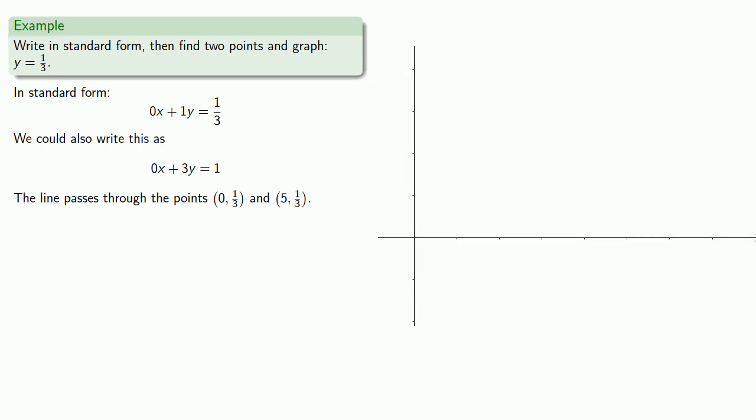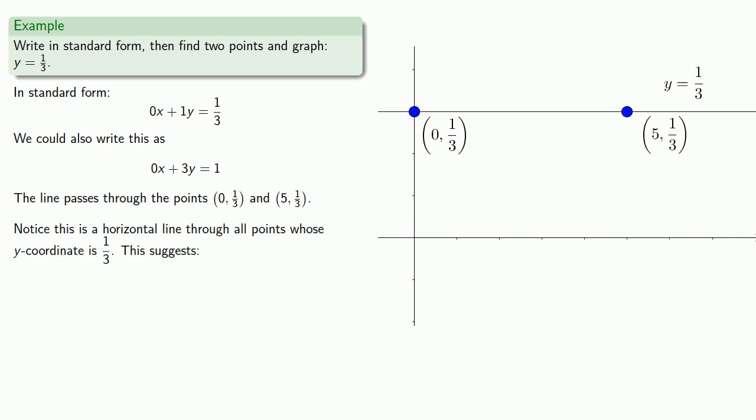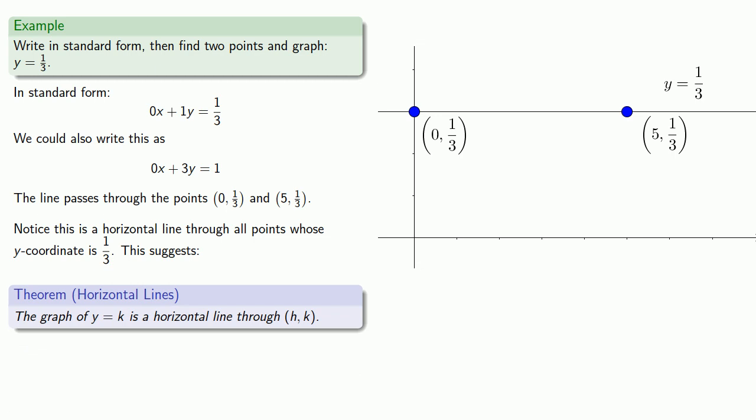So we'll graph these two points. (0, 1/3): Don't go right, but do go up some amount. (5, 1/3): Go to the right a bunch, and then up the same amount that you went the first time. Notice this is a horizontal line through all points whose y-coordinate is 1/3. And so this suggests the following theorem: The graph of y equals k is a horizontal line through (h, k).